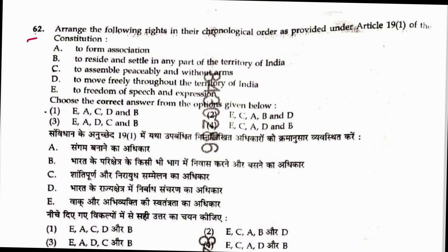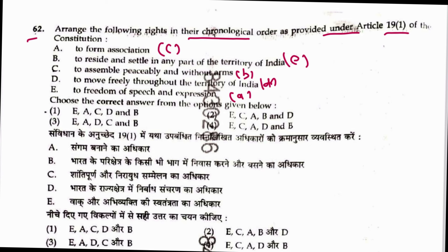Question 62: Arrange rights in chronological order as provided under Article 19(1). First comes right to freedom of speech and expression (A), then right to assemble peacefully (B), then form associations (C), then move freely throughout the territory (D), then reside and settle in any part of India (E). Sequence is E, C, A, D, B. Answer is 4.